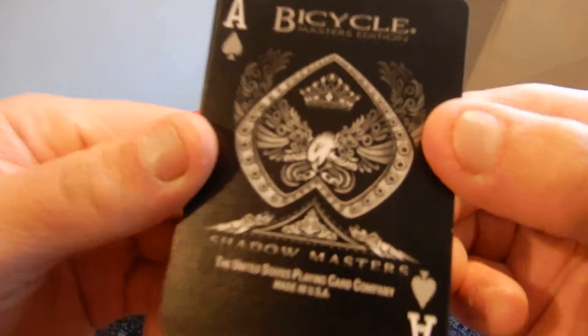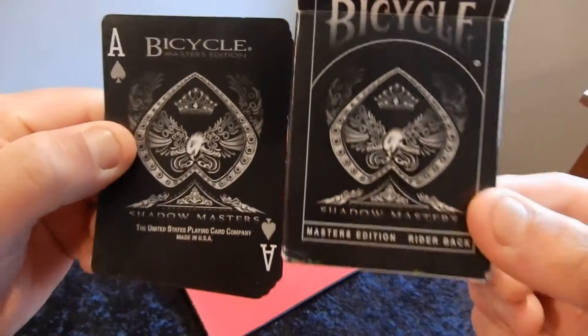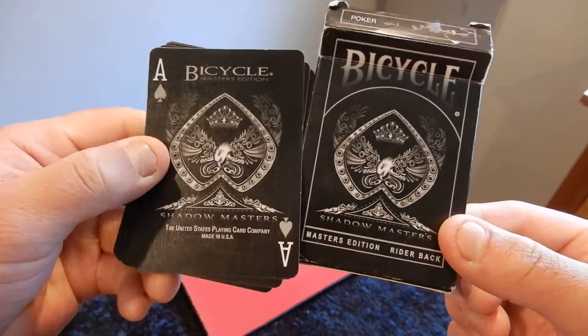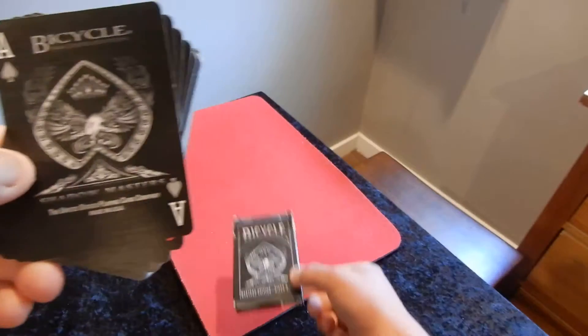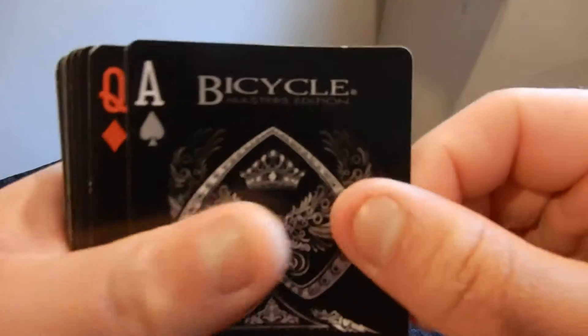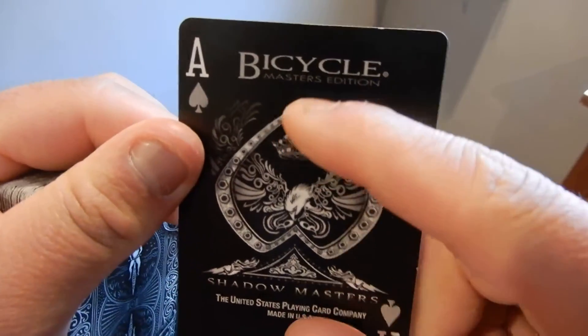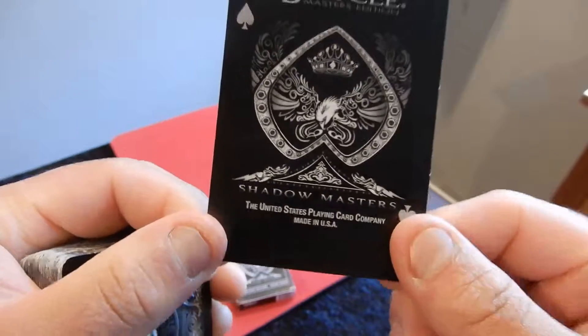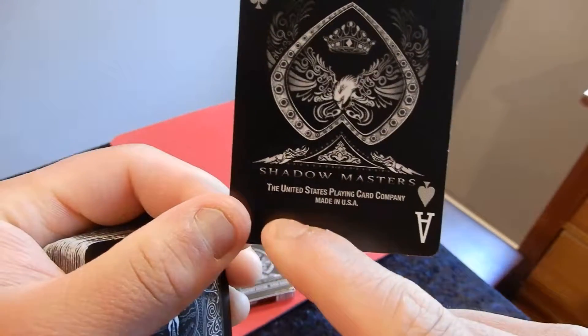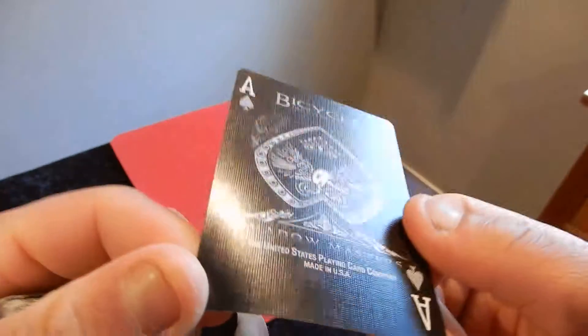Here's the magnificent Ace of Spades, just like the front of the box. So the Ace of Spades here, we got the 5th row here, Masters Edition. That's a cool spade here, Shadow Masters, the United States Playing Card Company on the bottom, made in USA. Pretty cool.